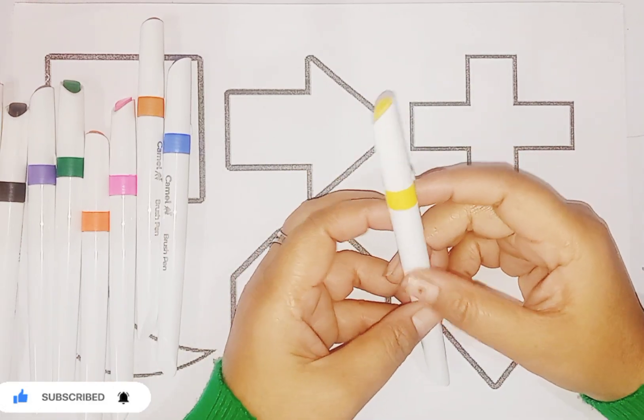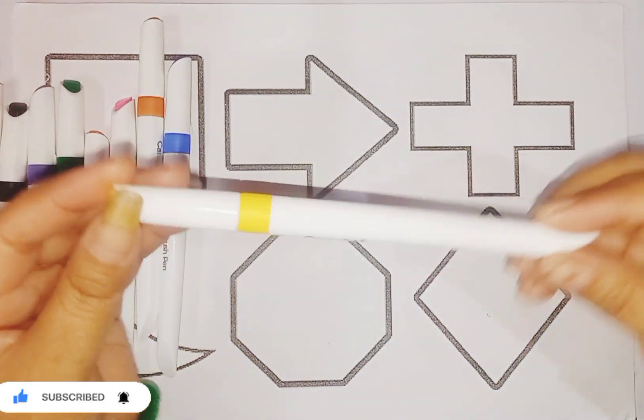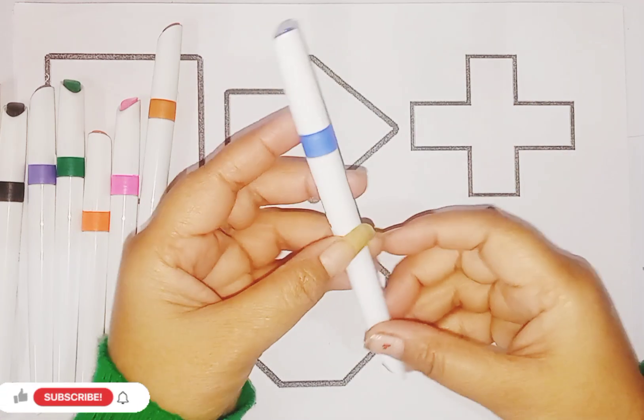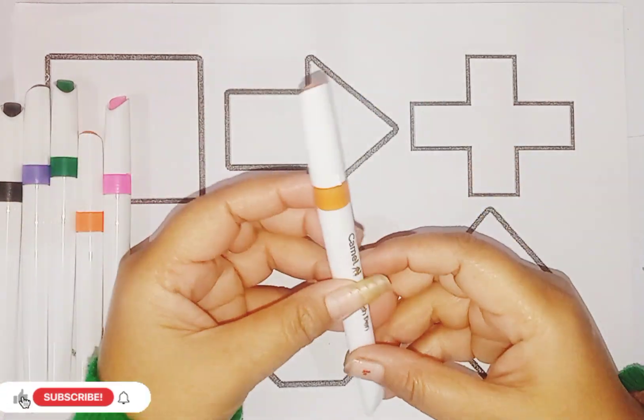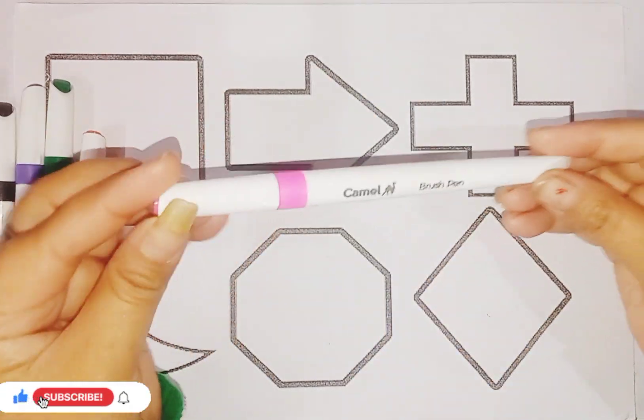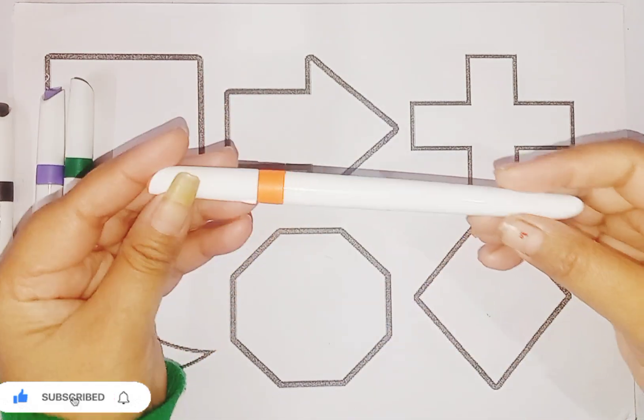This is yellow color kids. Which color? Yellow color. This is blue color, brown color, pinky pink, orange color, dark green color, purple color.